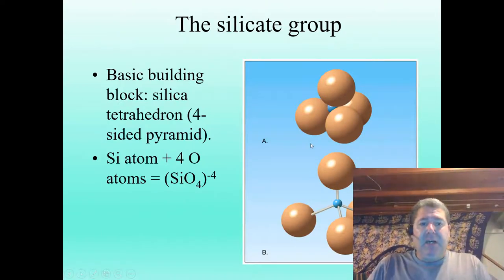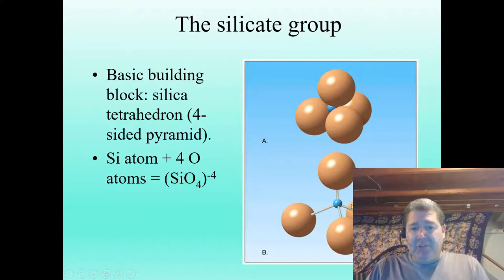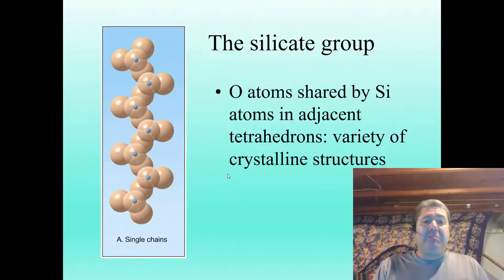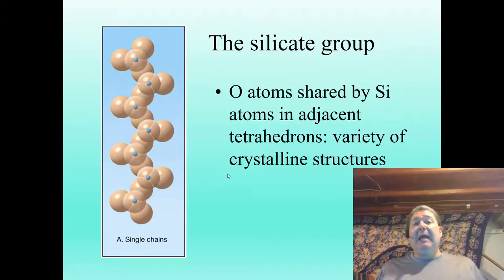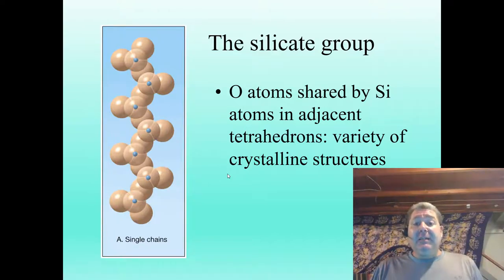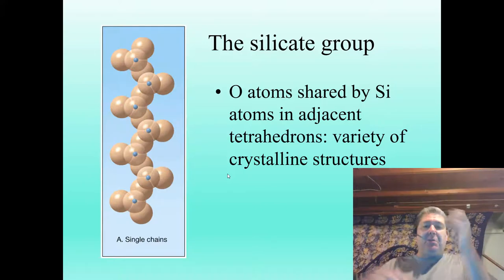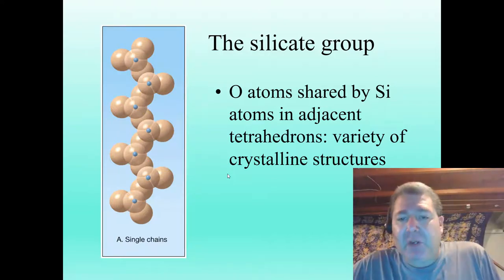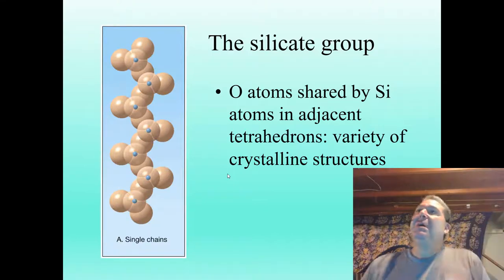Starting with the basic SiO4 silica tetrahedron, when linked to iron or magnesium, we get the mineral olivine — one of the simplest silicate minerals. When things are really hot, everything is disordered with no bonds — temperature is essentially fast vibration. As things cool down, we start to form these silica tetrahedra.